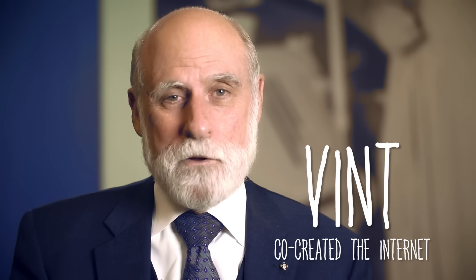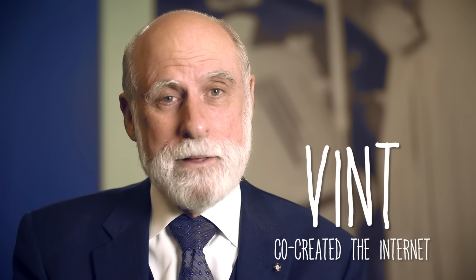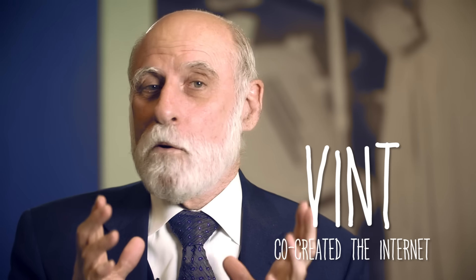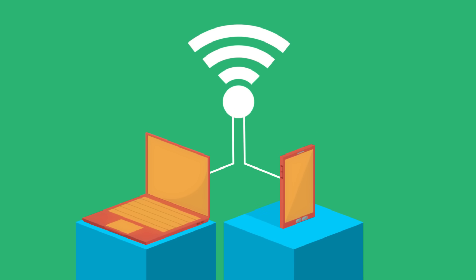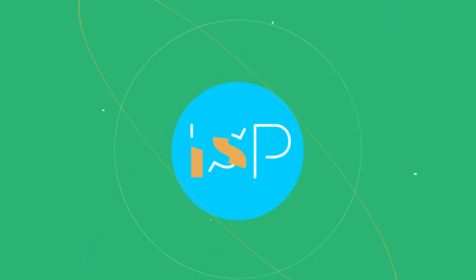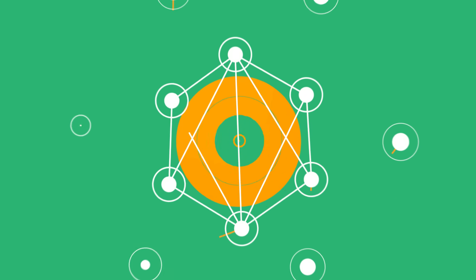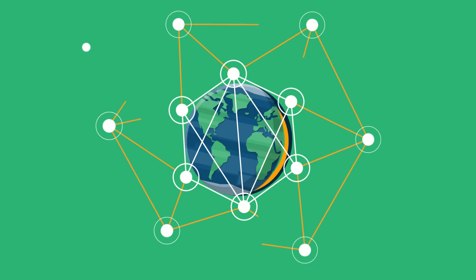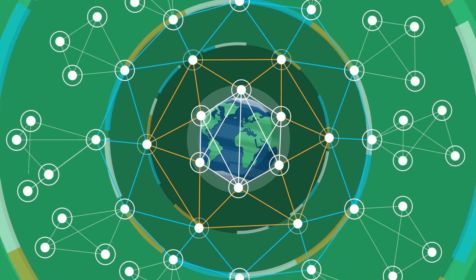The internet is a network of networks. It links billions of devices together all around the globe. Maybe you're connected with a laptop or a phone through Wi-Fi. But then that Wi-Fi connection connects to an internet service provider, or ISP, and that ISP connects you to billions and billions of devices around the world through hundreds of thousands of networks that are all interconnected.